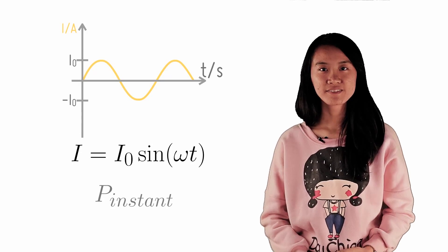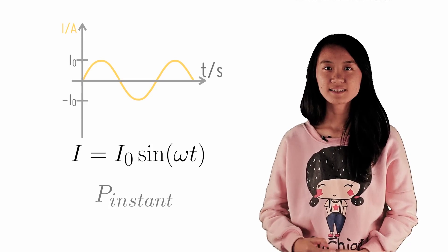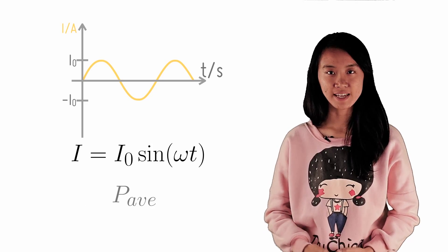In the previous checkpoint, we have looked at the instantaneous power of a sinusoidal AC. Now, it is time to move on to find the average power of the AC.